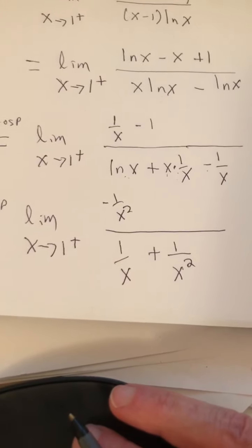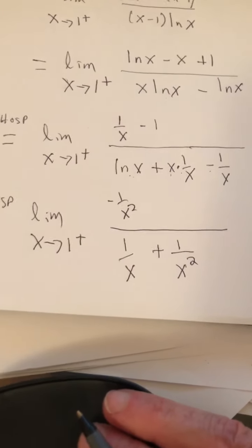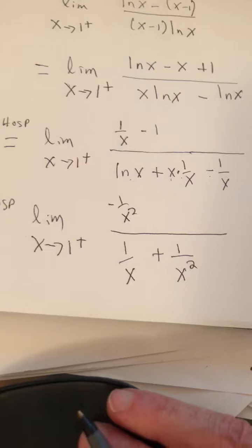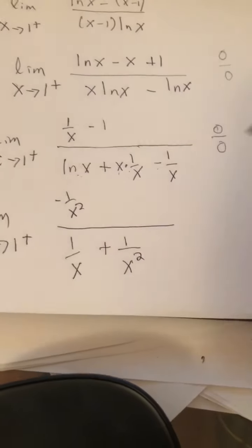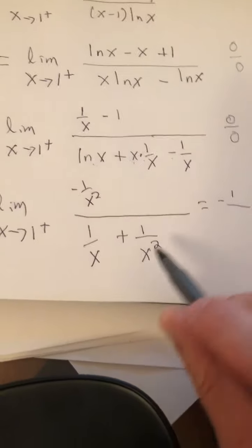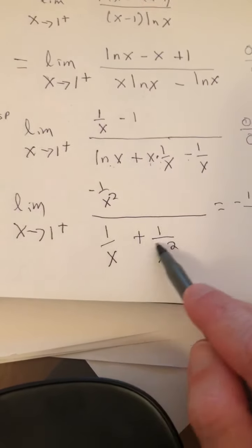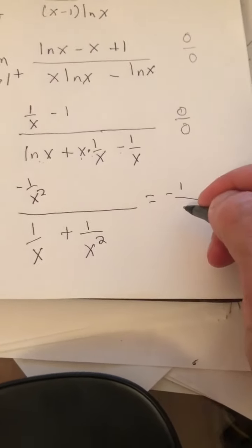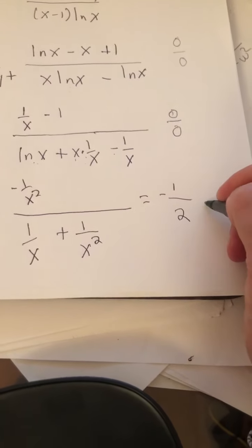So now if we use direct substitution, I think we get a result. The numerator is negative 1, and the denominator is 1 plus 1, which is 2. So this limit is negative 1 half.